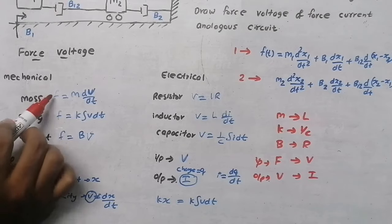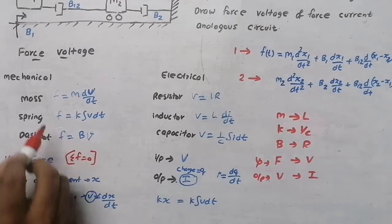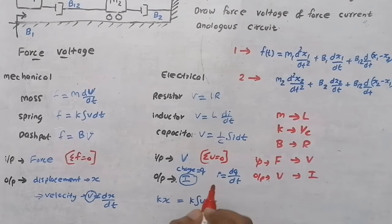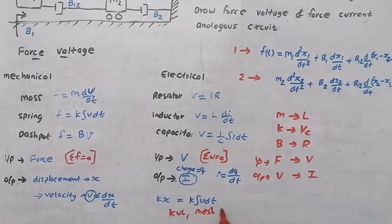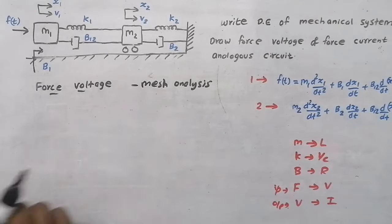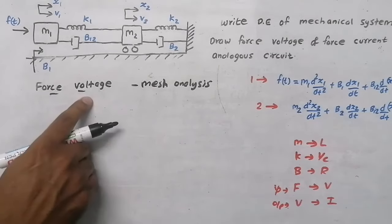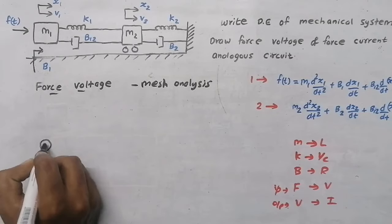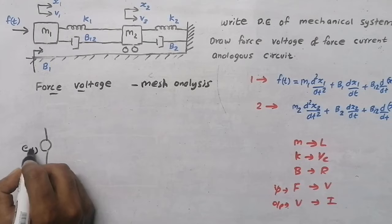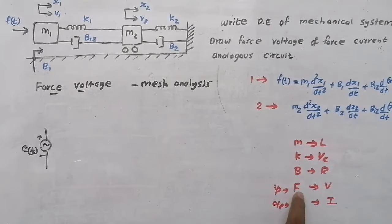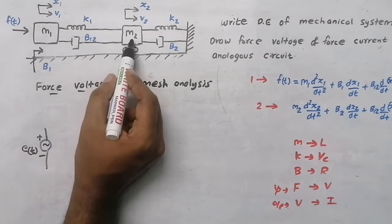Two more things: in the mechanical system, sum of forces equals zero (force balance equation); in the electrical system, sum of voltages equals zero — that is Kirchhoff's Voltage Law used in mesh analysis. Starting to draw the force voltage analogous circuit: the input is force, so in the electrical system it will be a voltage source. We draw a voltage source e(t) with plus-minus terminals.